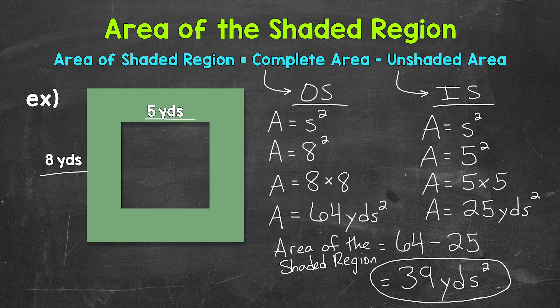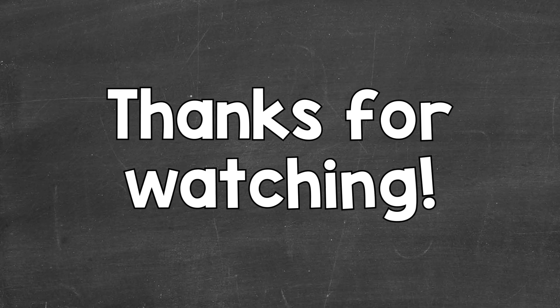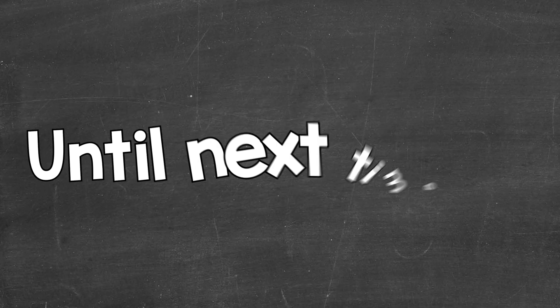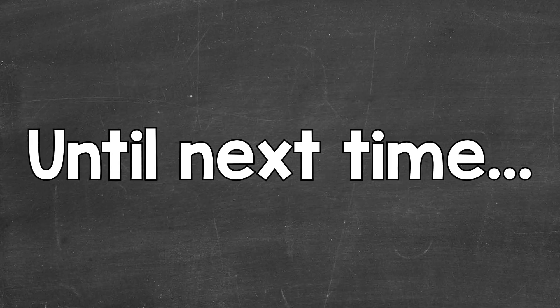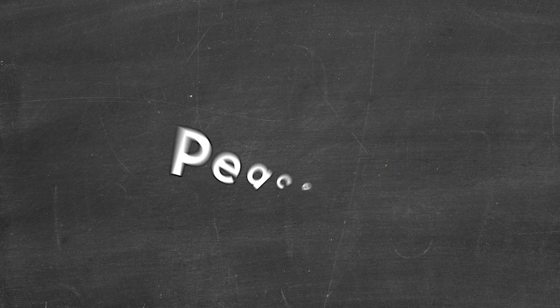That's the area of the shaded region. So there you have it — that's how to find the area of the shaded region. For our example, we had a square inside of a square. I hope that helped. Thanks so much for watching. Until next time. Peace.